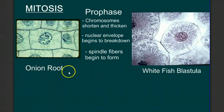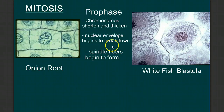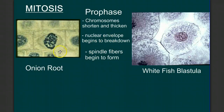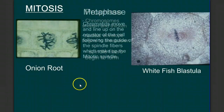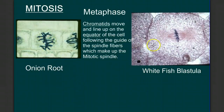On this side, we have an onion root cell as a plant cell example, and over here we have an animal cell — a white fish blastula. During prophase, chromosomes shorten and thicken, nuclear envelopes break down, and spindle fibers begin to form. Here's later in prophase in an onion root cell. Moving from prophase to metaphase, we move those chromosomes to the equator of the cell — very easy to see here. In this picture you can even see the spindle fibers forming.